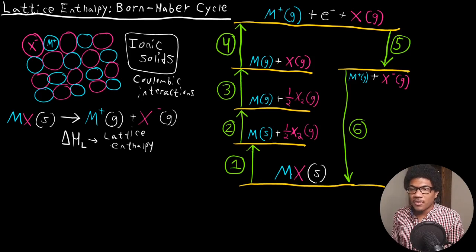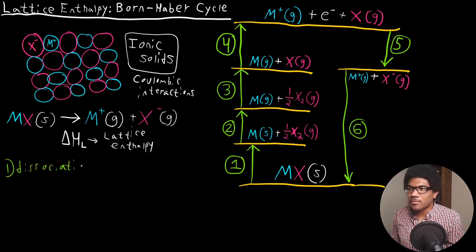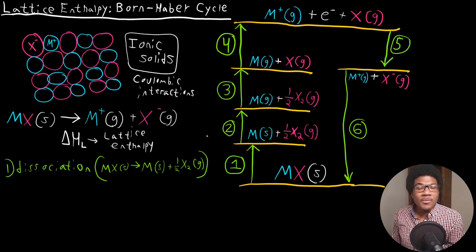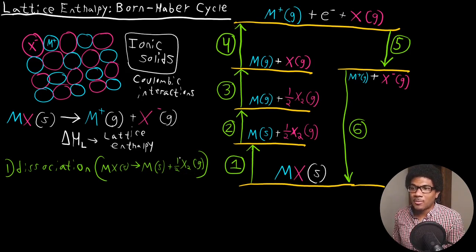Step one: we're going from the solid metal and halogen interacting to the dissociated compound. So the first step is the dissociation of the compound. In this compound, MX solid is decomposed into the solid metal M plus one-half X2. The halogens are usually dimers at standard conditions — for example, fluorine is F2, bromine is Br2, etc. That's why I'm accounting for the dimerization by putting a one-half stoichiometric coefficient in front. So the first step is dissociation of the whole compound.